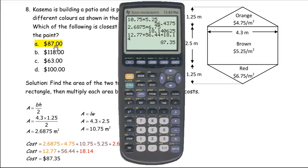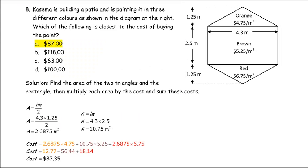You are asked which of the following is closest. So $87 is certainly the closest. $63 is quite a bit below that, and $100 and $118 are quite a bit above that. $87 is only $0.35 difference, so $87 is the closest price. So A is the correct answer.